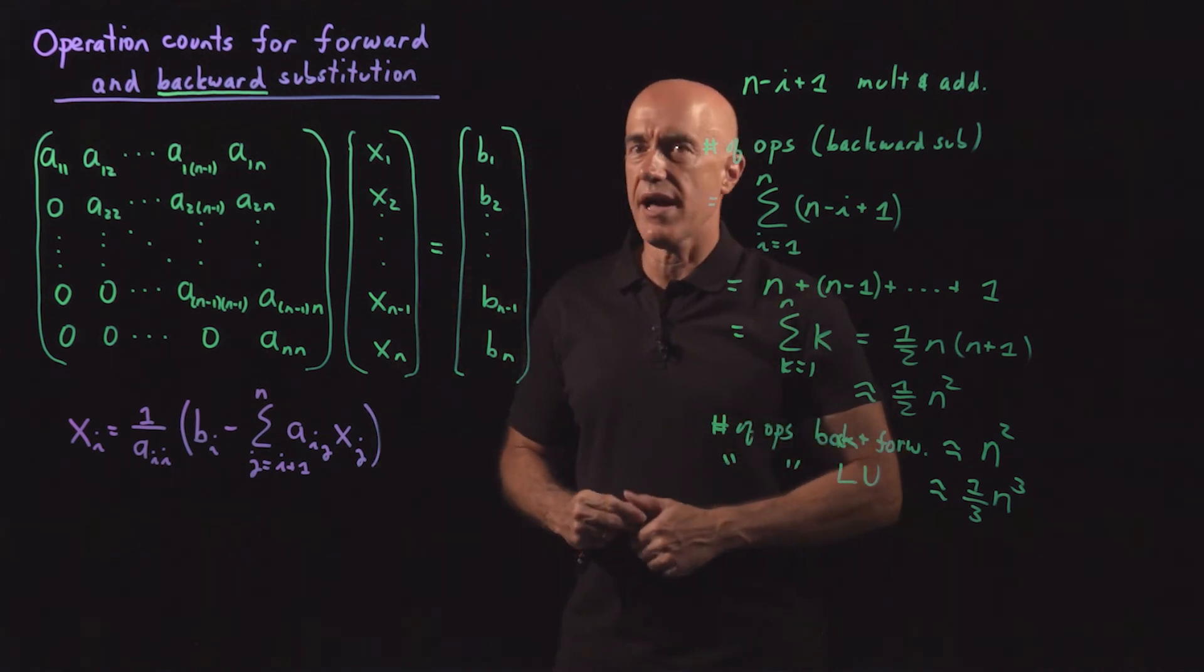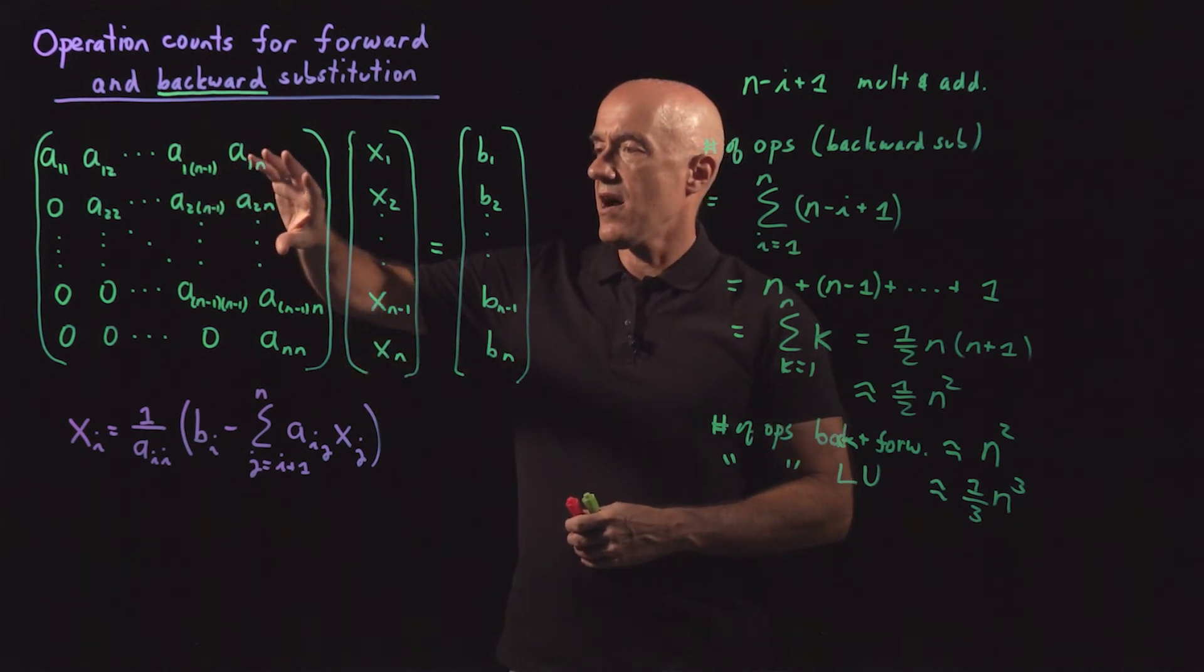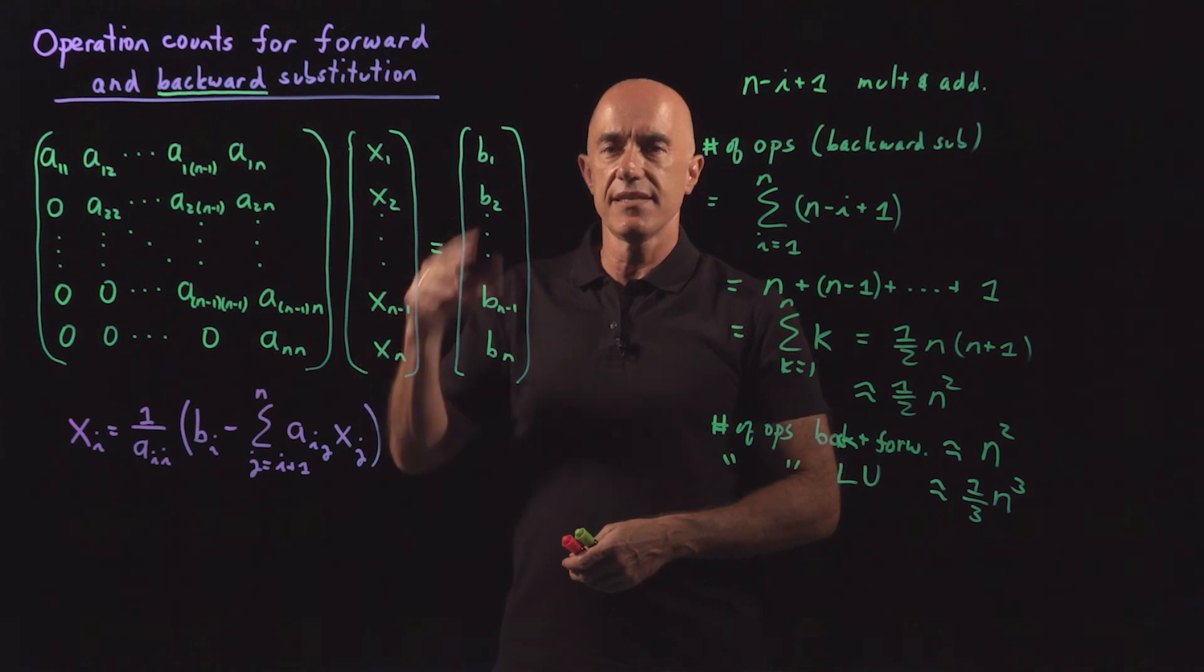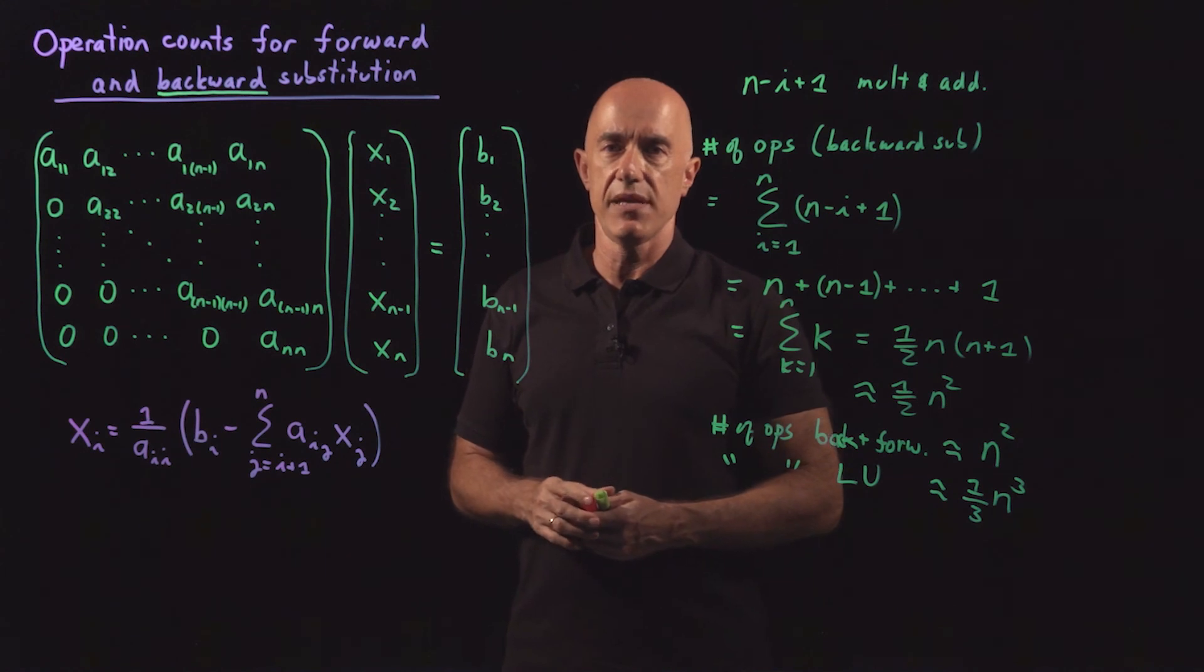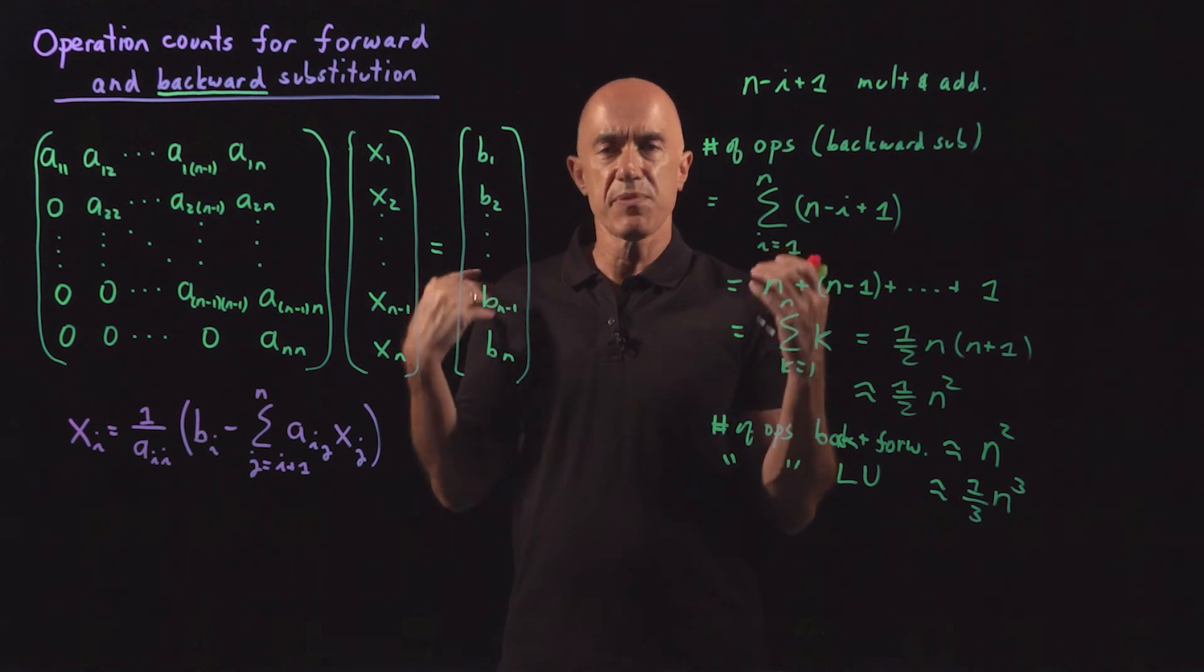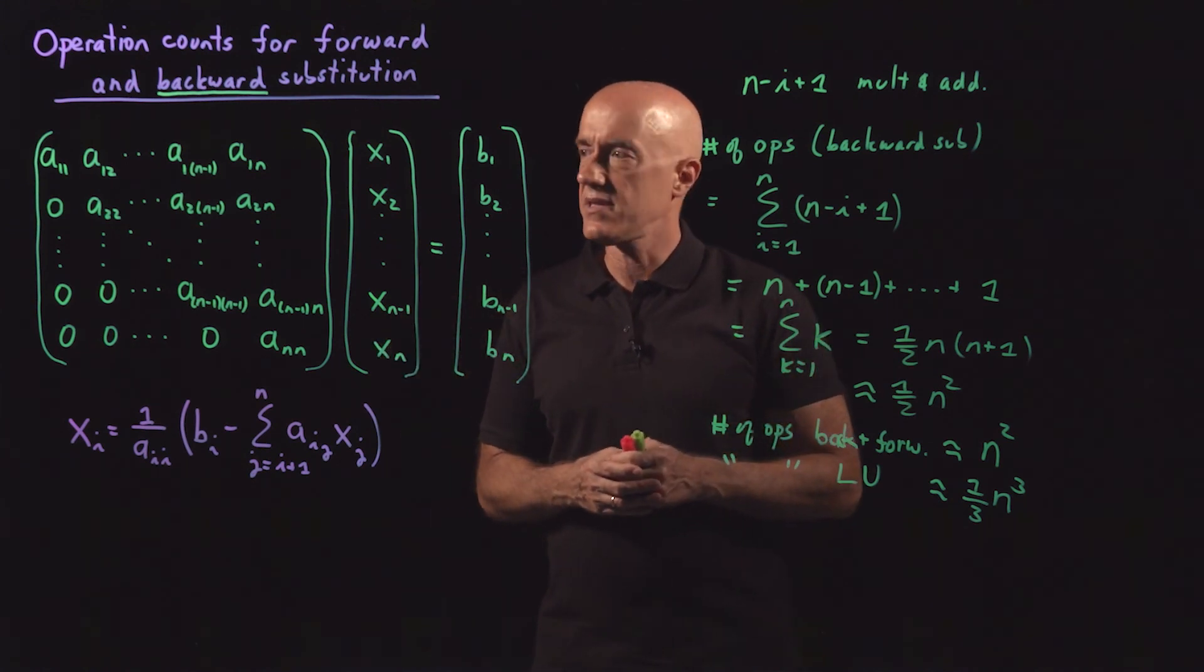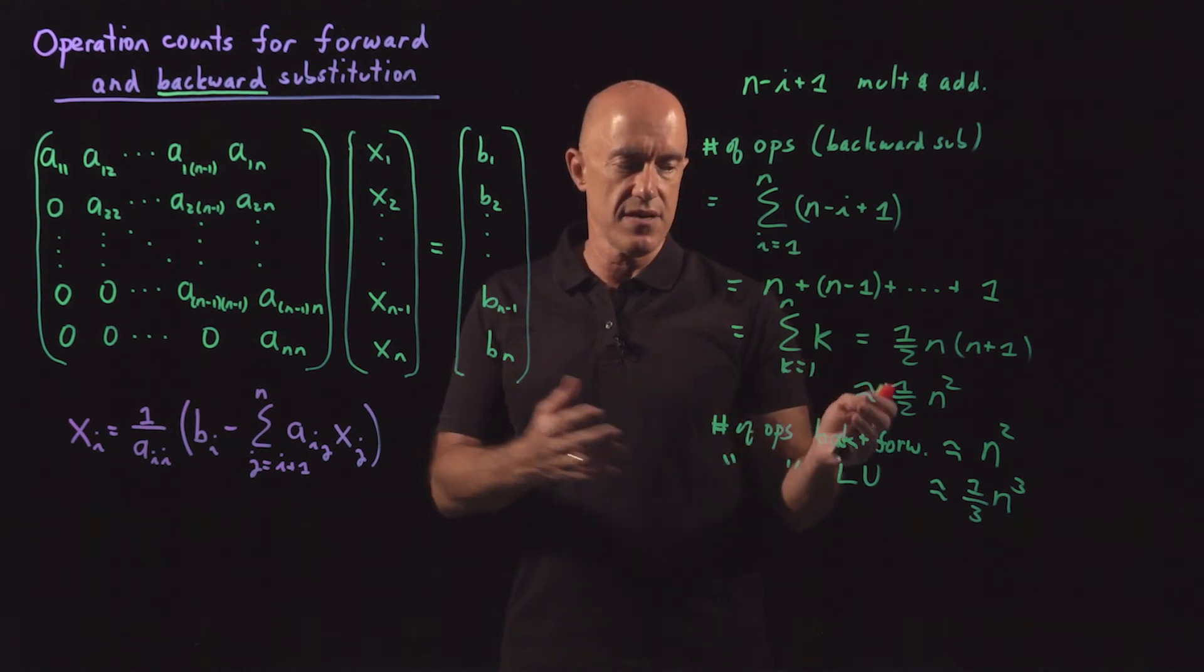So let me summarize. By counting operations, I've shown you that the solution of LUx equals b using forward and backward substitution is significantly faster than the solution of Ax equals b using full Gaussian elimination. This is particularly true when the matrices are full. So when A has no zeros in it, a full matrix. If A has a lot of zeros, then it's not as bad as I've said here.